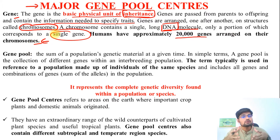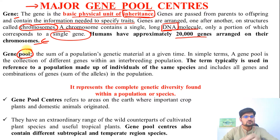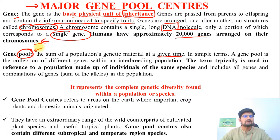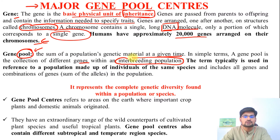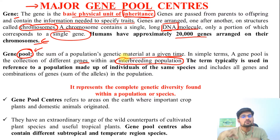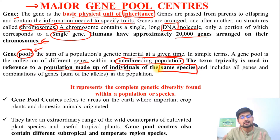So what about gene pool? The word itself — pool — means collection. The sum of a population's genetic material at a given time is called its gene pool. Gene pool is the collection of different genes within an interbreeding population — the population that is producing offspring among themselves has a separate gene pool. The term typically refers to a population made up of individuals of the same species. Different species means a different gene pool.